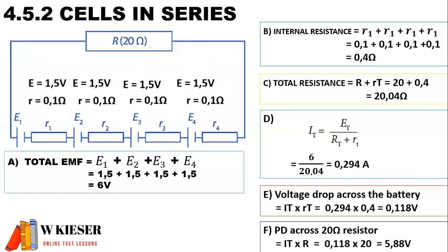To calculate the potential difference across the external load of the 20 ohm resistor, it is the supply current multiplied by the value of the external resistor. Therefore, the potential difference across the load is 5.88 volts. As we can see, the original voltage across the battery is 6 volts, the volt drop is 0.118 volts, and the potential difference across the external load is 5.88 volts.